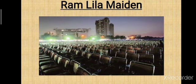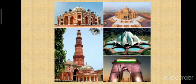Ramlila Maidan is where all the important public meetings are held. People from all religions, states, and areas live in Delhi. People speak different languages, wear different dresses, and celebrate different festivals.